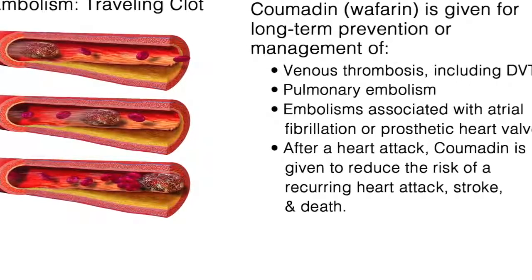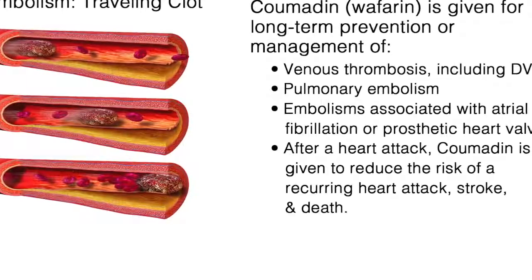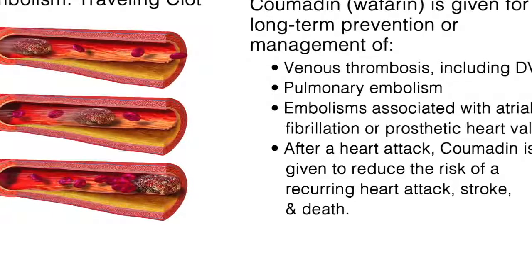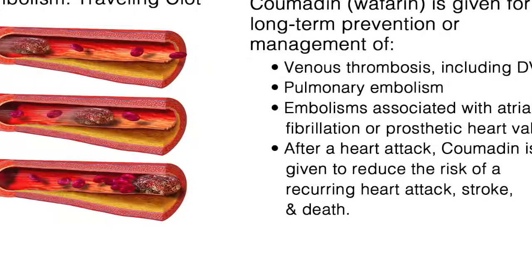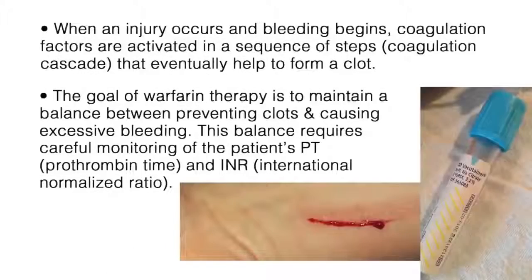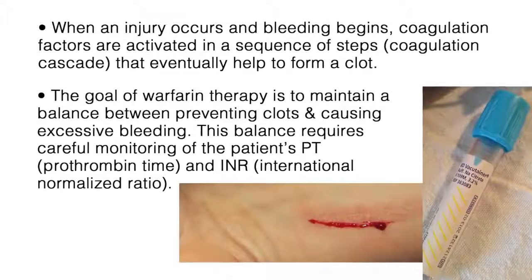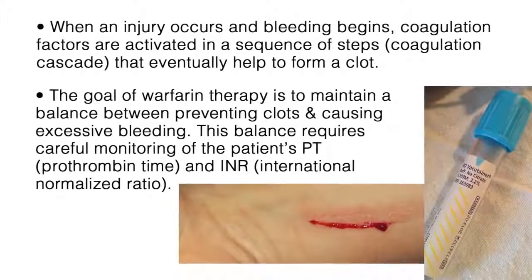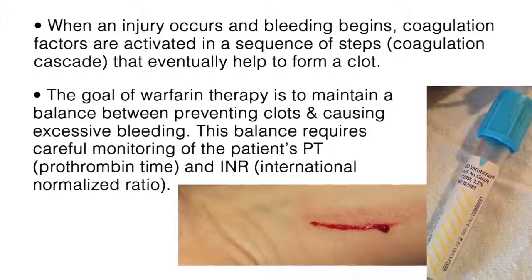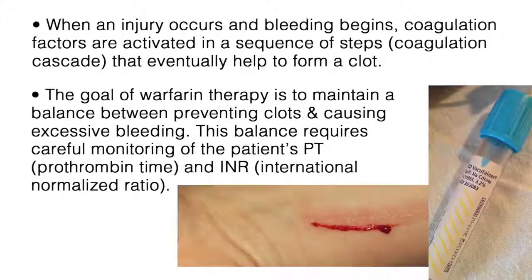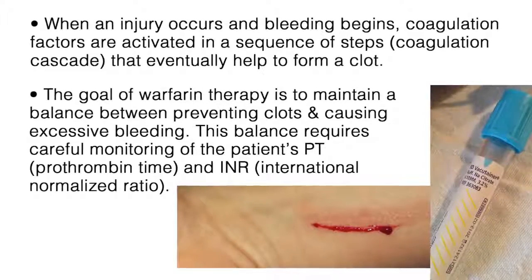Coumadin does not have a direct effect on an established thrombus or blood clot, but once a thrombus has occurred, the goal is to prevent secondary complications that may result. Several proteins called coagulation factors are involved in the process that the body uses to form blood clots to control bleeding. When an injury occurs and bleeding begins, coagulation factors are activated in a sequence of steps, called the coagulation cascade, that eventually help to form a clot. The goal of warfarin therapy is to maintain a balance between preventing clots and causing excessive bleeding.